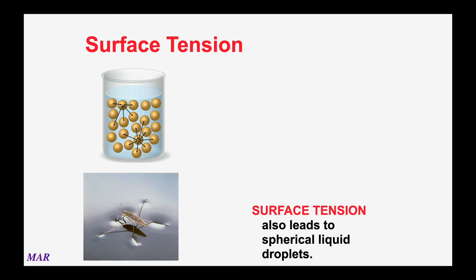Surface tension is really important for the biological world. Insects can actually float on water — that's how they live on the surface, and birds come down and eat them. This is only possible because the surface of the liquid has a net inward force, allowing small things like a paper clip or a bug to float. Adding soap breaks the surface tension and the paper clip sinks. Similarly, an oil spill acts like soap — it breaks the surface tension, so insects can't float and they drown.